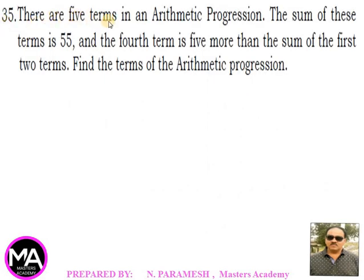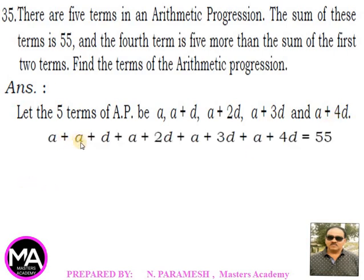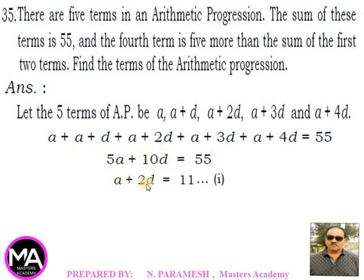35th question: There are five terms in an arithmetic progression. The sum of these terms is 55 and the fourth term is five more than the sum of the first two terms. Find the terms of the arithmetic progression. Let the five terms be a, a+d, a+2d, a+3d, a+4d. Their sum gives 5a + 10d = 55, which simplifies to a + 2d = 11 — call this equation 1.